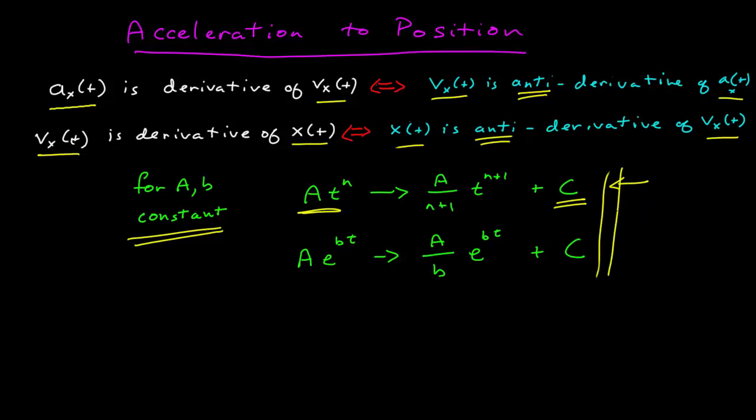This is sometimes called an arbitrary constant, because it can be any constant you want, because once you take the derivative, the derivative of a constant is 0, so you can differentiate this whole thing and you still get A times t to the n, regardless of what this value of c is.